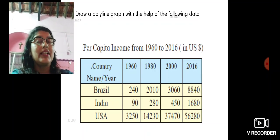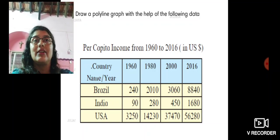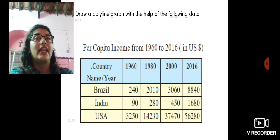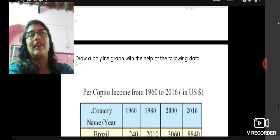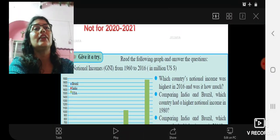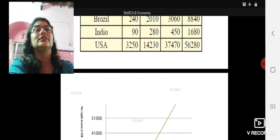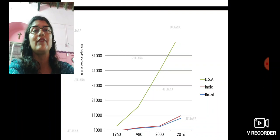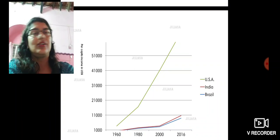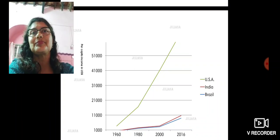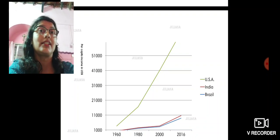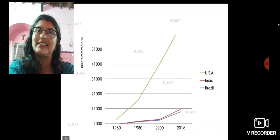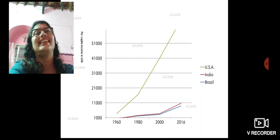Then you can format it — you can put labels and change the color by clicking on the line. Here I have made this polyline graph using PowerPoint. In fact, all my graphs and charts I have done in a similar way by using technology.